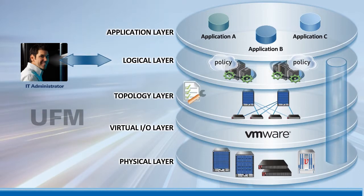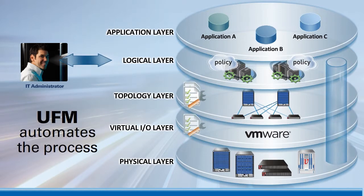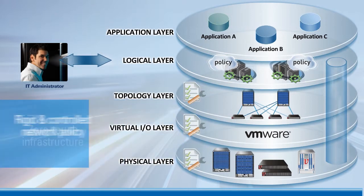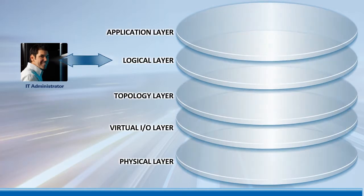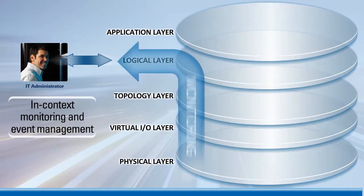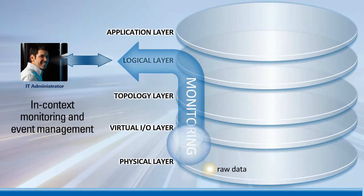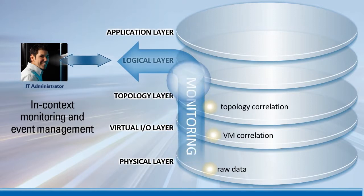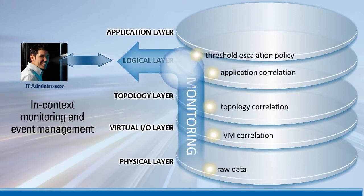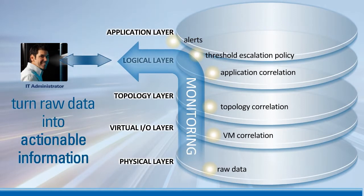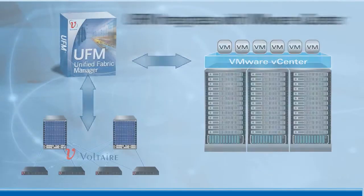Instead, administrators can simply match network policy to a logical compute group. From that point on, UFM automates the process, enabling a zero-touch infrastructure while maintaining a rigid and controlled networking policy. The same model applies to monitoring and event management within the fabric — network and traffic data and events are presented to the user in the context of the particular application and topology, turning raw data into actionable information.